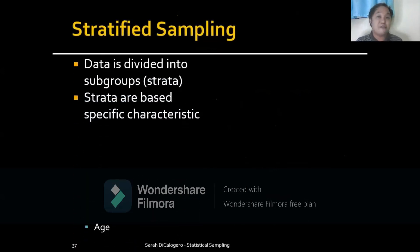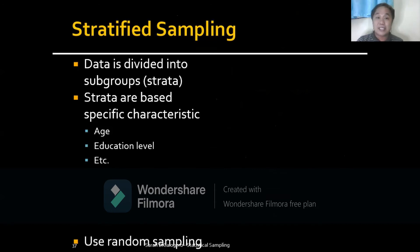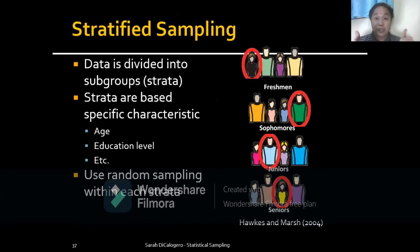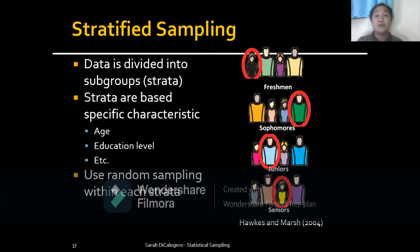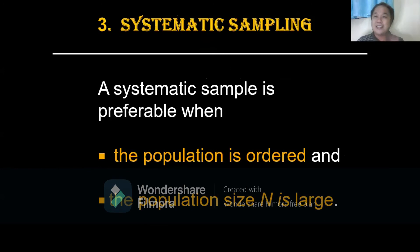How to do stratified sampling: data is divided into sub-groups called strata. The strata are based on specific characteristics such as age, educational level, etc. After that, you use random sampling within each stratum.